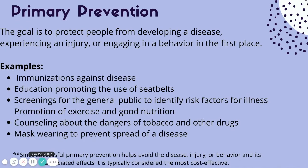Primary prevention was that big block at the bottom of the triangle. The purpose of primary prevention is to protect people from developing a disease, experiencing an injury, or engaging in a high-risk behavior in the first place. In the 90s, there was a big push for people to wear seatbelts because research proved that wearing seatbelts lowers the risk for injuries in auto accidents and even death — an example of primary prevention, with commercials, billboards, and magazines educating a large number of people so they would not engage in the behavior of not wearing a seatbelt.